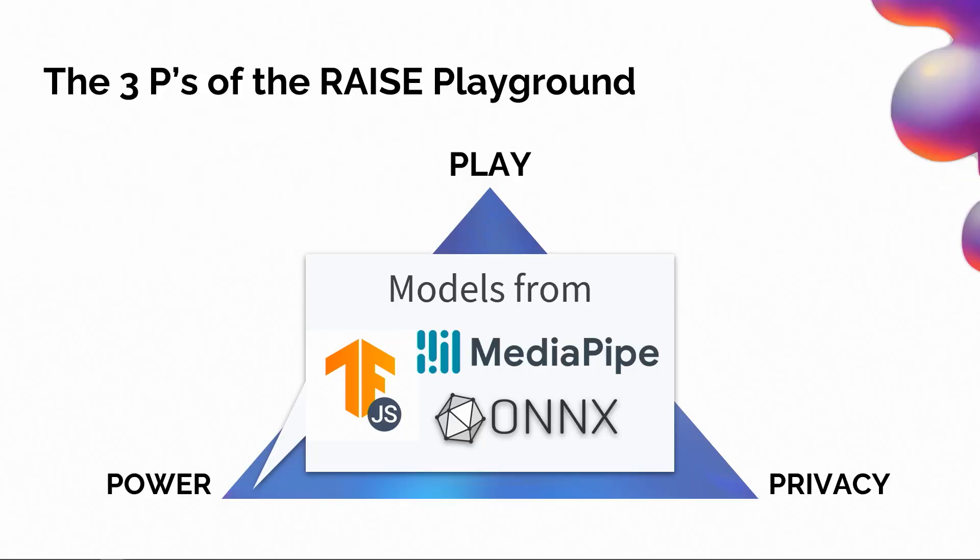The next P is Power. These models are all running directly in the student's browser. That might sound limiting, but recently there's been a lot of innovation to bring cutting-edge AI models to run directly in the browser, aided by projects out of Google like TensorFlow.js and MediaPipe. There's also work by Microsoft called ONNX, which enables you to train models anywhere and then run them in the browser runtime. We're able to bring these powerful, cutting-edge models directly to the student's browser.